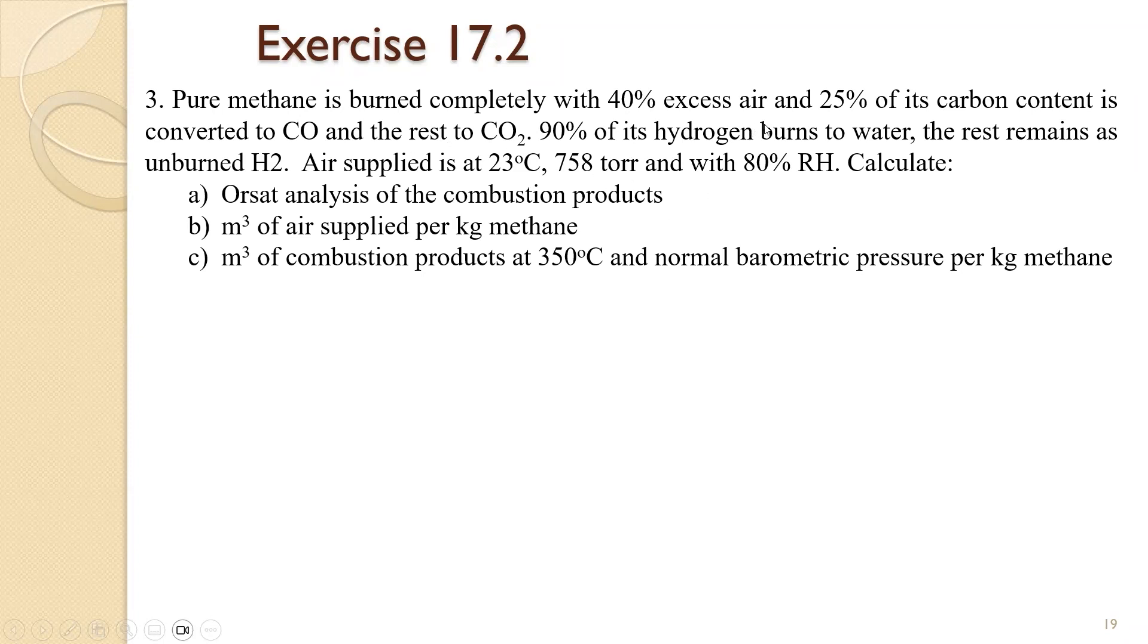Pure methane is burned completely with 40% excess air and 25% of its carbon content is converted to CO, the rest to CO2. 90% of its hydrogen burns to water. The rest remains as unburned H2. Air is supplied at 23 degrees Celsius, 758 torr, and with 80% relative humidity. Calculate the Orsat analysis of the combustion products, cubic meters of air supplied per kilogram of methane, and cubic meters of combustion products at 350 and normal barometric pressure per kilogram of methane.